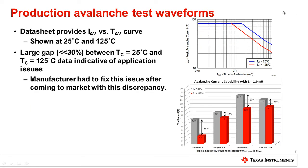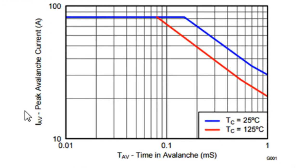The last thing I'd like to highlight is this figure that appears on all of our power MOSFET datasheets — at least those recommended for switching applications. It's usually figure 11 in the datasheet. What we show is avalanche current capability versus time spent in avalanche, shown at a case temperature of 25 degrees and then at 125 degrees, to show the difference. In this case, the case temperature of the MOSFET is very close to the actual junction temperature of the silicon die.